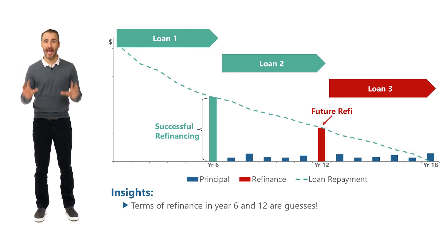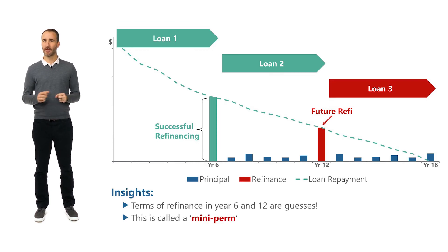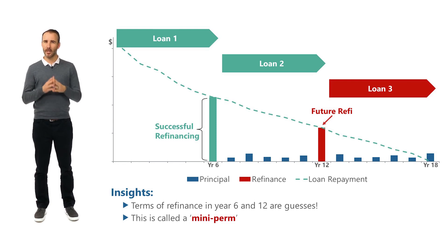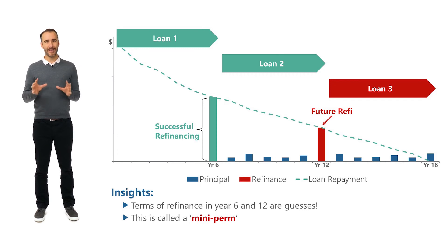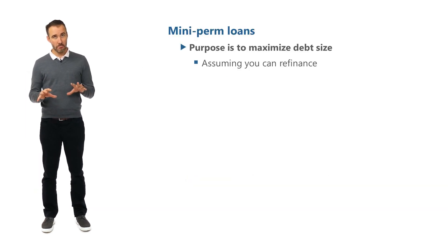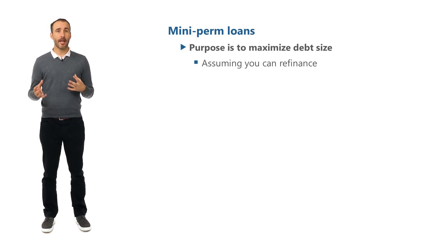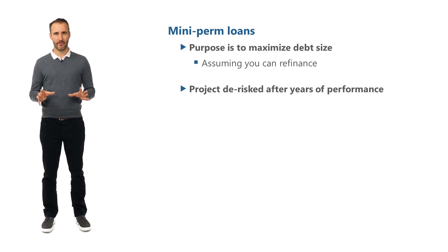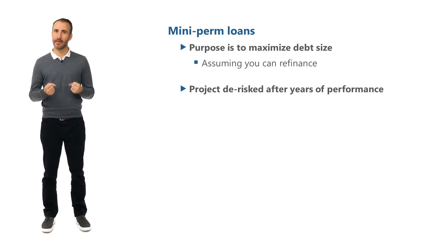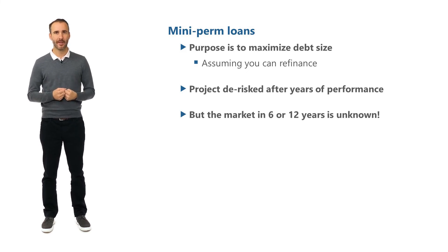Even if you think you haven't heard of this, you may have — it's called a mini-perm. And there is some logic to it: an 18-year loan has 18 years of cash flow to repay the loan, so we'll have a higher debt size than a six-year loan, and more debt equals higher returns. The project also likely has less risk once it's been operating for a few years, and we'll have a history of operations, so the cash flows may be regarded as more certain. But who knows what the market will be like then?